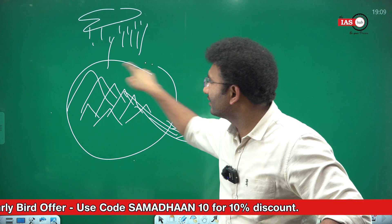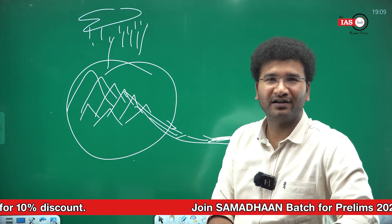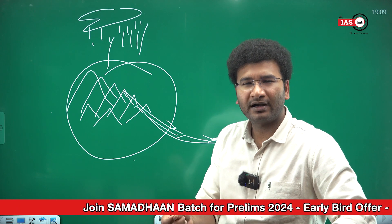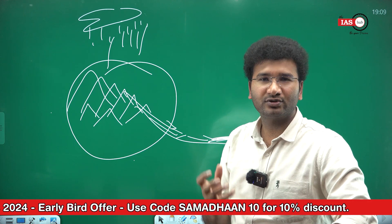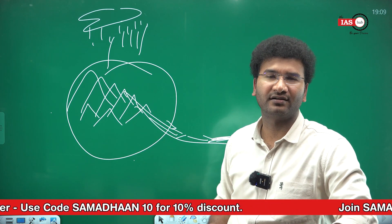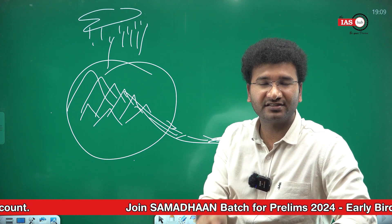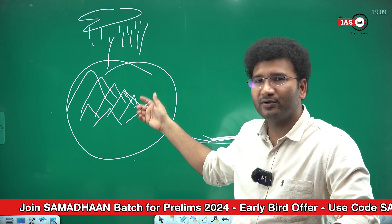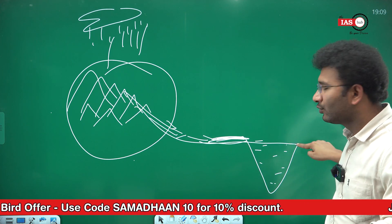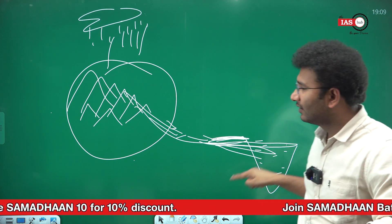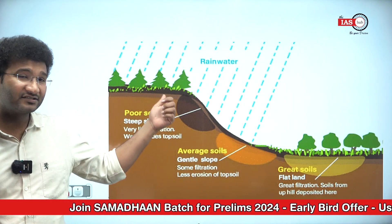So cropping is very difficult in the mountains — only plantation crops. Plantation crops mean if you plant one time, you will get fruits for 3 to 10 years. Cash crops or plantation crops such as tea, coffee, apples, and orchards can be grown. But in a good soil region on the plains, you will have a very good agricultural and fertile region. That is the role of topography.